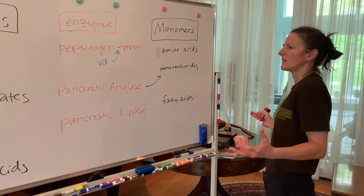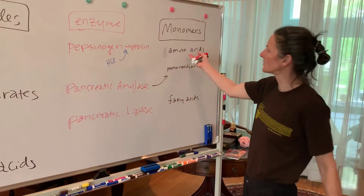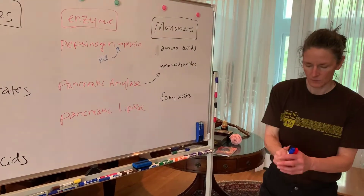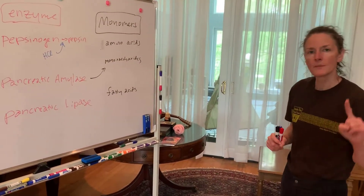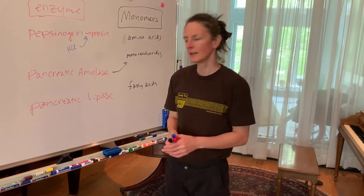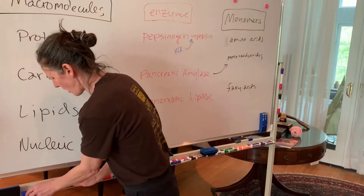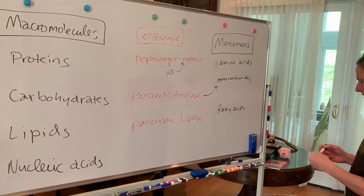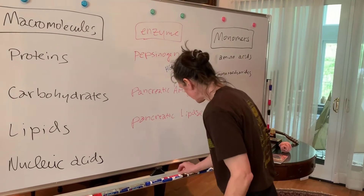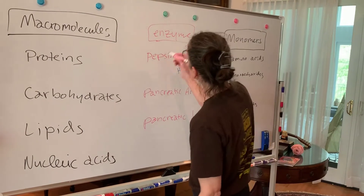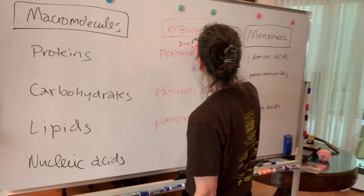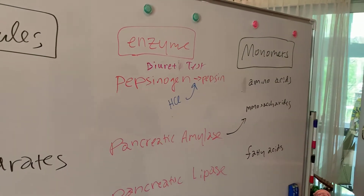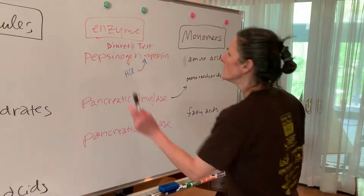We also need to check whether our reactions worked — did we get amino acids, monosaccharides, or fatty acids? To do this we use indicators. For proteins we use the Biuret test — also known as the Biuret test or the Kujowski test. The Biuret test indicates the presence of peptide bonds.